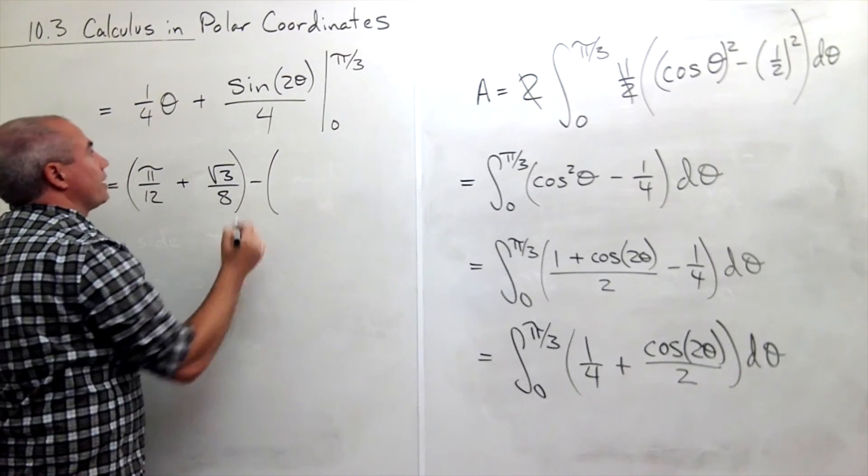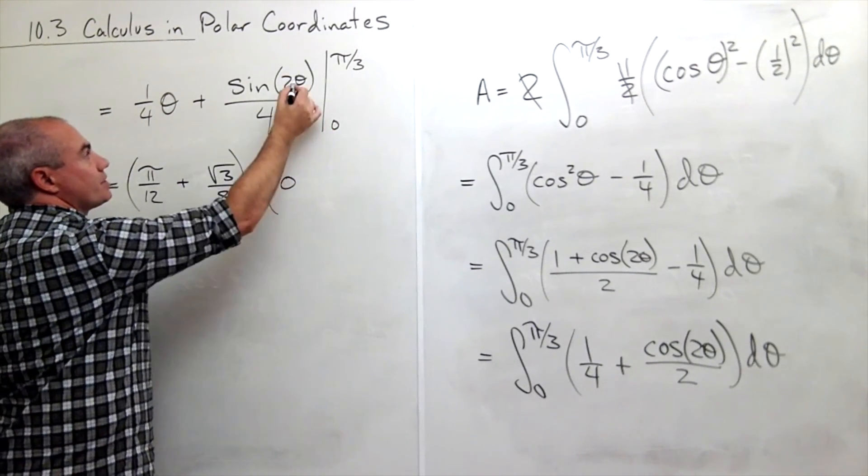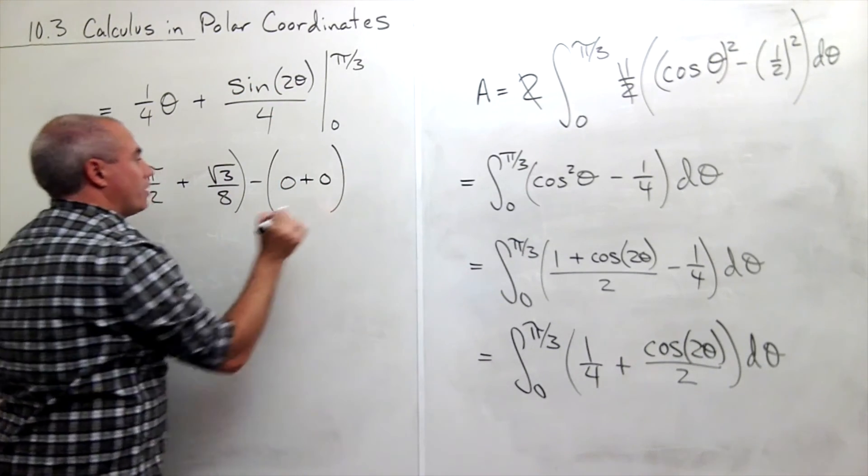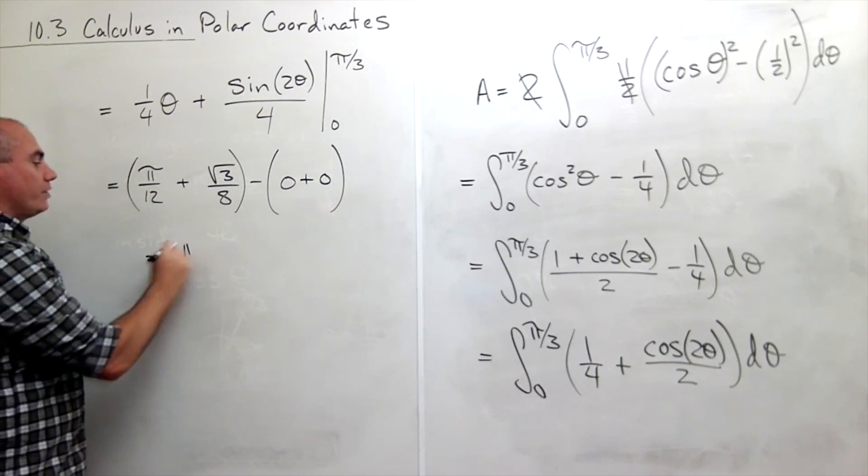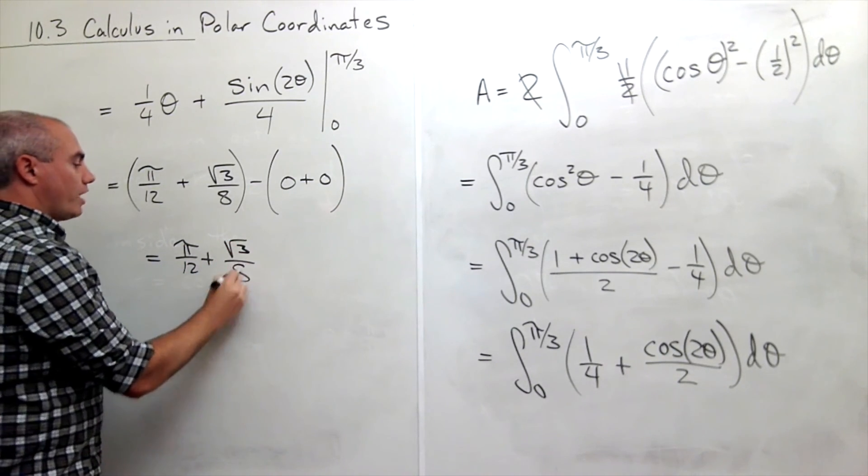Then I subtract, plugging in the 0. I plug in 0 here, I get 0. I plug in 0 here, I get sine of 0 over 4, which is also 0. And I'm left with pi over 12 plus root 3 over 8.